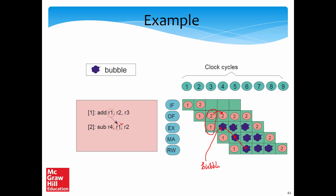Similarly in cycle 5, a bubble is inserted in EX, and again in cycle 6 another bubble is inserted. In cycle 5 instruction 1 writes the value of R1 to the register file, so in cycle 6 instruction 2 can read R1. In cycle 7 instruction 2 proceeds to EX, then MA, and finally in cycle 9 it finishes in the RW stage. So we need three bubbles — inserted in cycles 4, 5, and 6 — which travel through the pipeline doing nothing while instruction 2 waits in the OF stage.